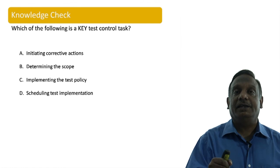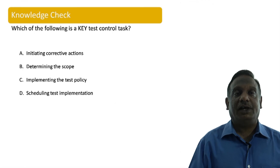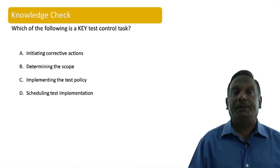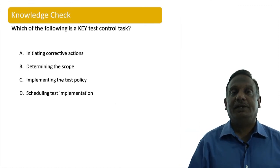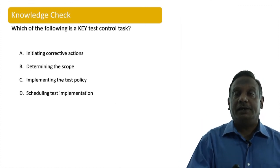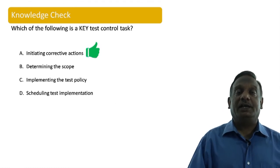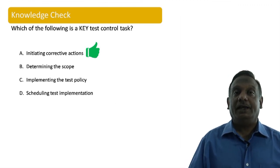Let us check another question. Which of the following is a key test control task? A — initiating corrective actions; B — determining scope; C — implementing the test policy; D — scheduling test implementation. Determining the scope is a planning activity. Implementing the test policy is a planning activity. Scheduling test implementation is a planning activity. What is not a planning activity? Initiating corrective action whenever things are deviating. So the right answer is A. Hope you have understood.